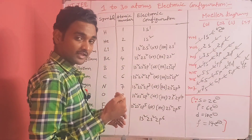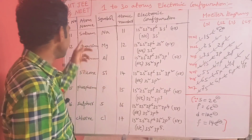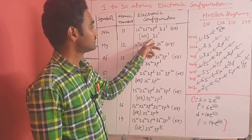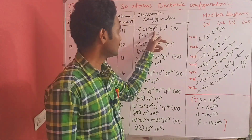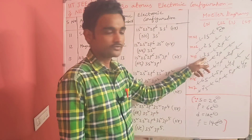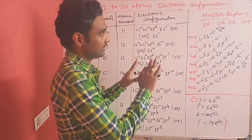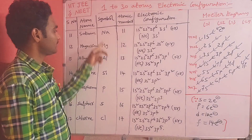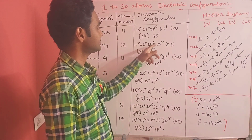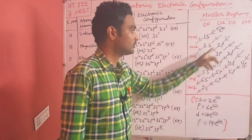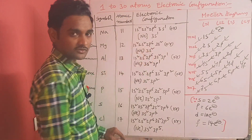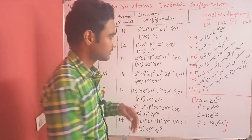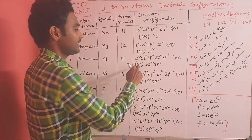Since the 2p orbital is completely filled, the next electron goes to 3s1. Sodium (Na), atomic number 11: 1s2 2s2 2p6 3s1, or [Ne] 3s1. By using the Moeller diagram we can write electronic configurations in this way. Magnesium (Mg), atomic number 12: 1s2 2s2 2p6 3s2, or [Ne] 3s2 — the 3s capacity is complete. Aluminium (Al), atomic number 13: 1s2 2s2 2p6 3s2 3p1, or [Ne] 3s2 3p1.